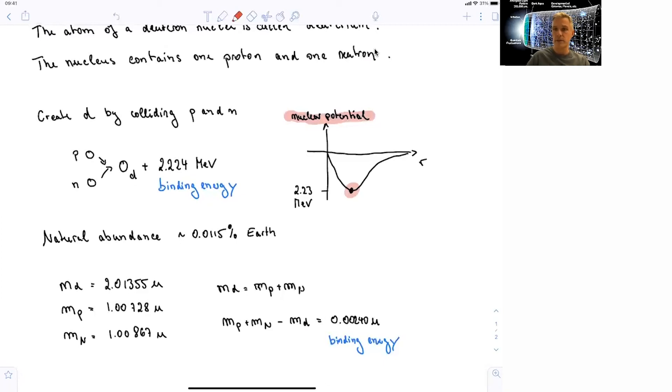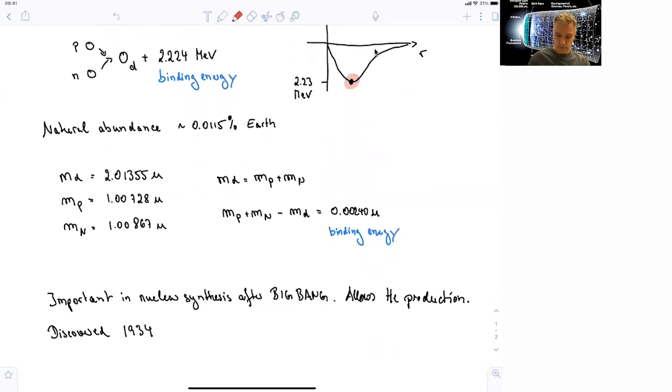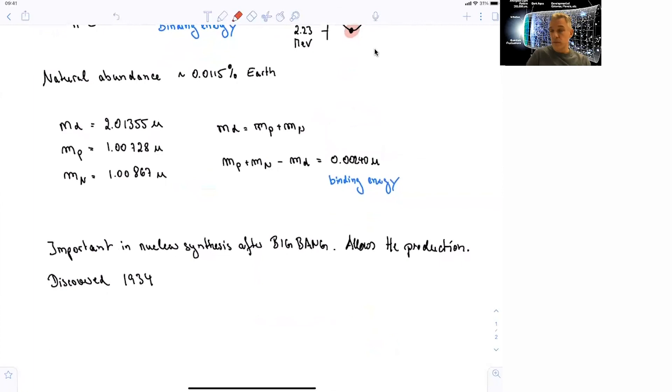Again, that's the minimal energy needed in order to free up the proton and the neutron. If you add more energy, then you actually also give kinetic energy to the proton and the neutron. The deuterium was discovered in 1934 and is fundamental also in production of hydrogen bombs, which were produced about 20 years later. So the deuterium itself is a rather important nuclei.